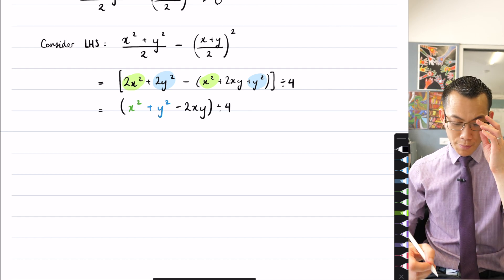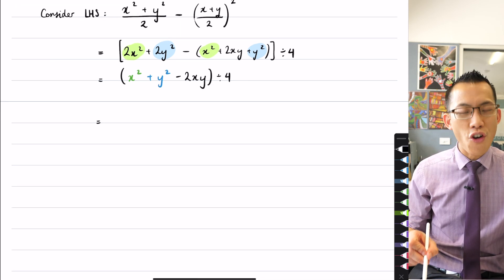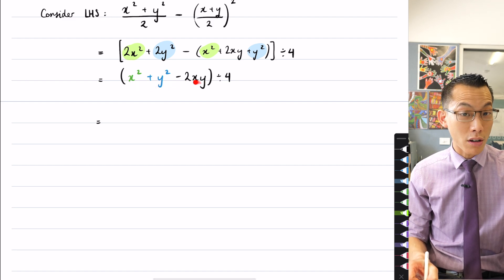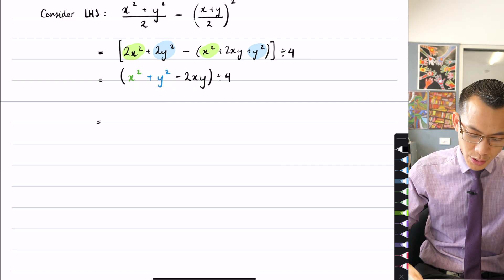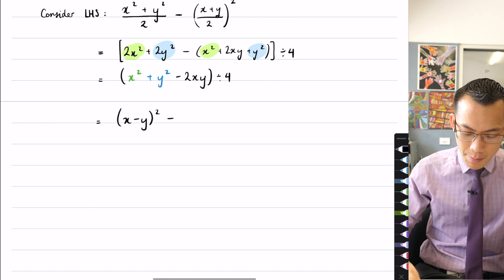Now hopefully you recognize this result because you can say, wait, I can factorize this thing, this is a binomial that has been squared. Because it's this squared, this squared, and then double the product in the middle. So this is clearly just going to be x minus y all squared divided by 4.